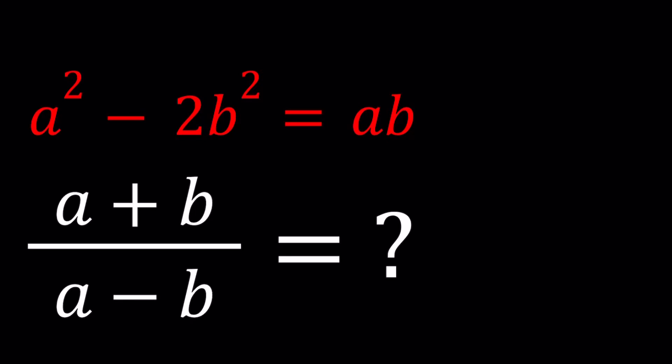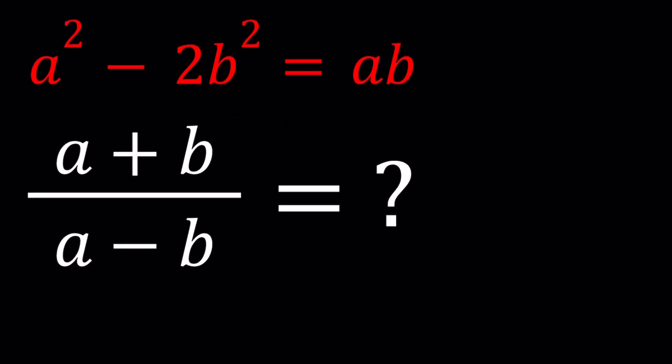Hello everyone. In this video, we're going to be evaluating a ratio based on a given equation. We have a squared minus 2b squared equals ab, and we're going to evaluate a plus b divided by a minus b to find a numerical value. I'll be presenting at least two methods.